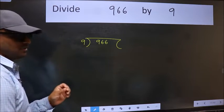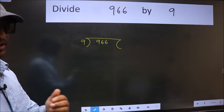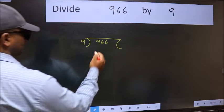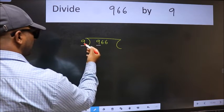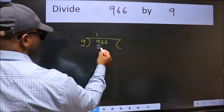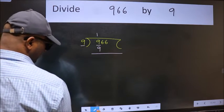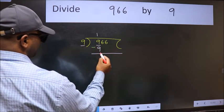This is your step 1. Next, here we have 9 and here 9. When do we get 9 in 9 table? 9 once 9. Now we should subtract. We get 0.